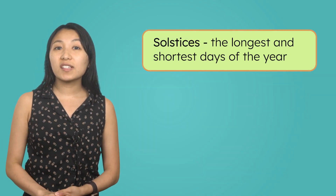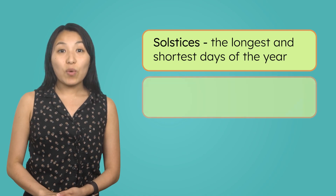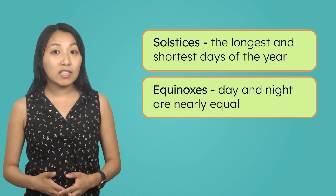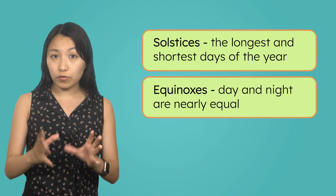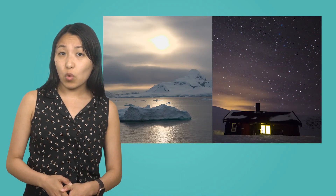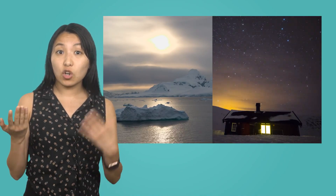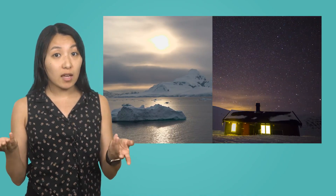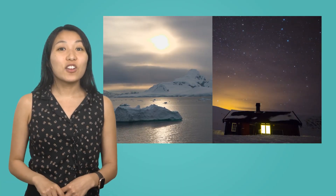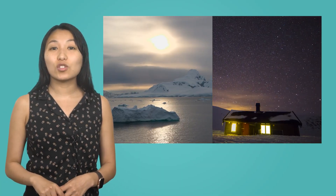To sum up, solstices mark the longest and shortest days of the year, while equinoxes are when day and night hours are nearly equal. Both are crucial for understanding our calendar and the changing seasons. And I think we might have just uncovered the answer to our question: why is it daylight at one pole and dark at the other at the same time of day? It's because of the way the Earth is tilted during the solstices.